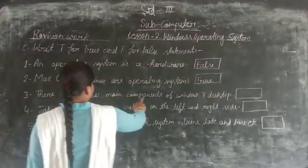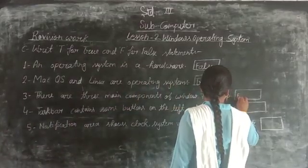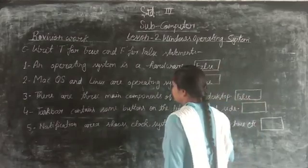Third, there are three main components of Windows 7 desktop. This is false.